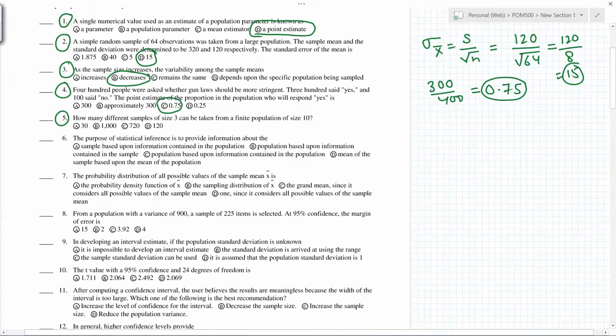How many different samples of size 3 from 10? We use the combination formula COMBIN. This should give you 120 - there are 120 ways you can select 3 out of 10.